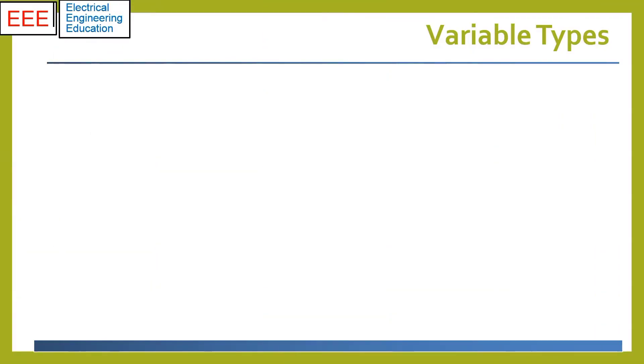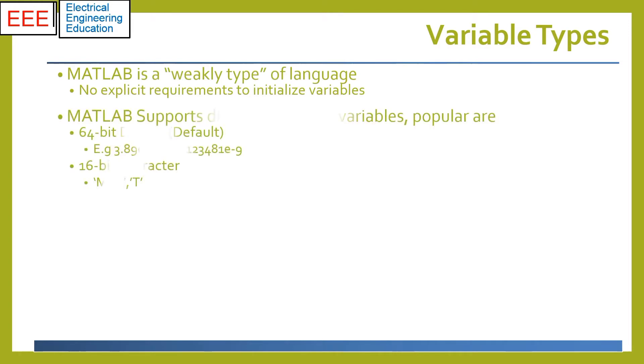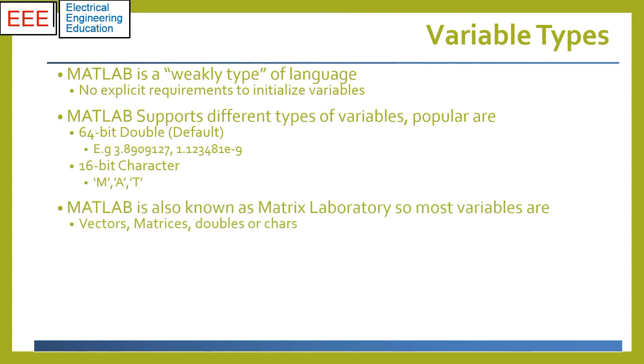MATLAB is a weakly typed programming language with no explicit declaration or data type requirements. Variables are of type double by default with 8 bytes or 64-bit memory allocation. String variables are enclosed in single quotes and each character is 16-bit or 2 bytes.